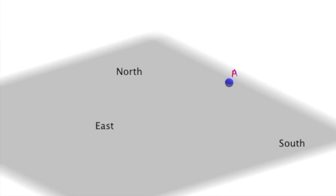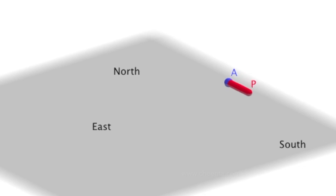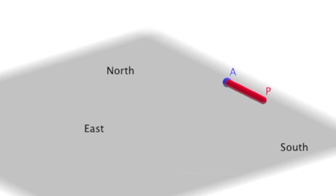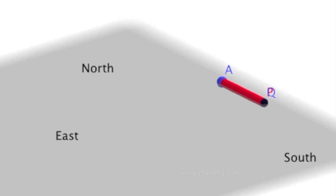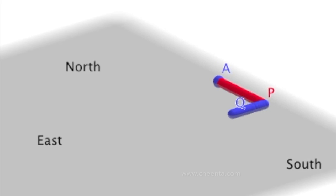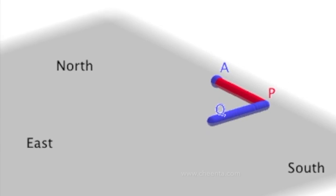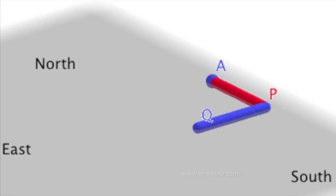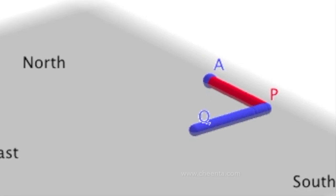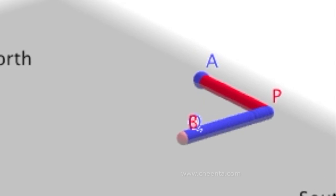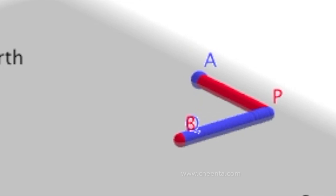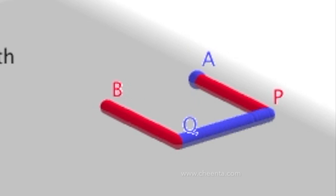Here is an interesting problem. Suppose you are at point A. Let's walk one mile south to point P, then one mile east to Q, and finally one mile north to point B. If we are walking on the plane, then A will never be equal to B.